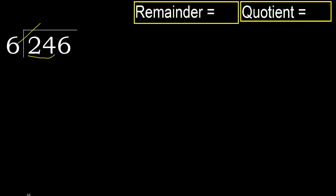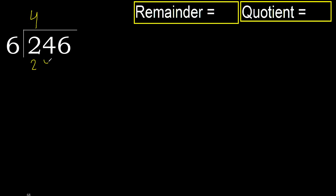6 multiplied by which number is nearest to 24 but not greater? 6 multiplied by 5 is 30 — 30 is greater. 6 multiplied by 4 is 24, which is not greater. Subtract. Next.